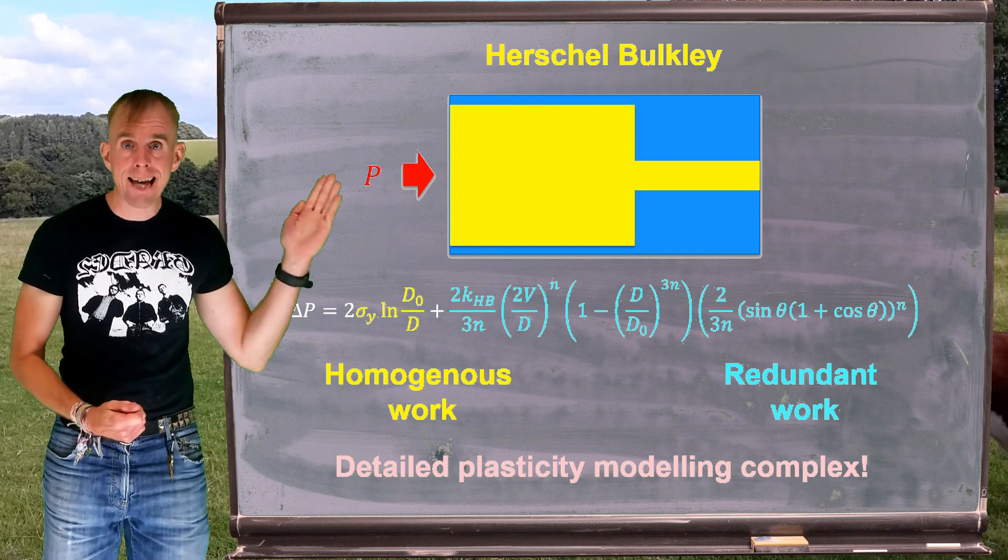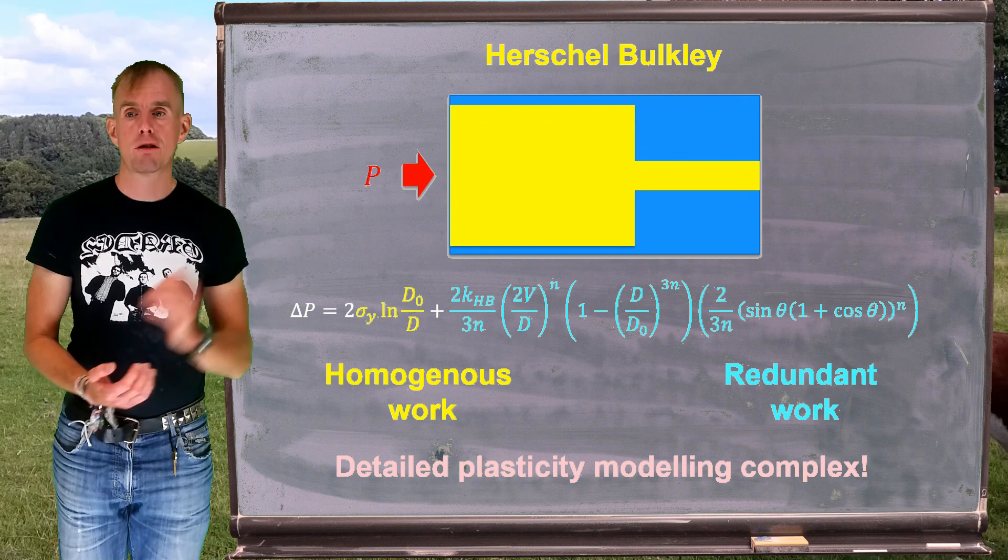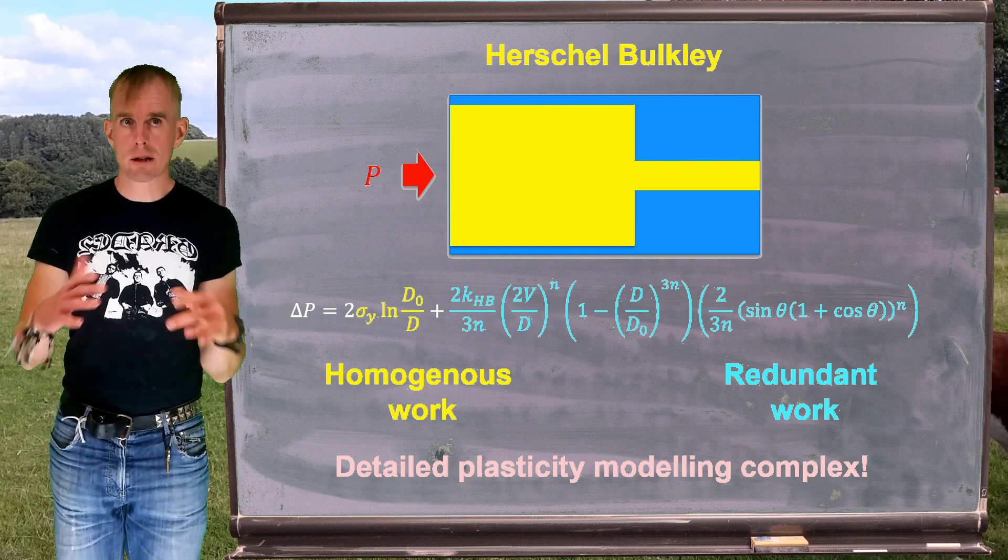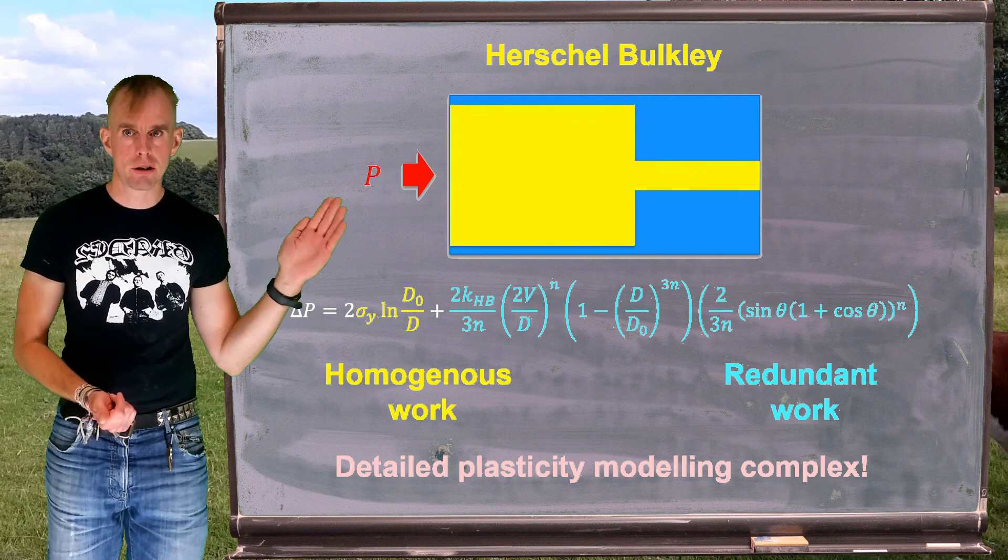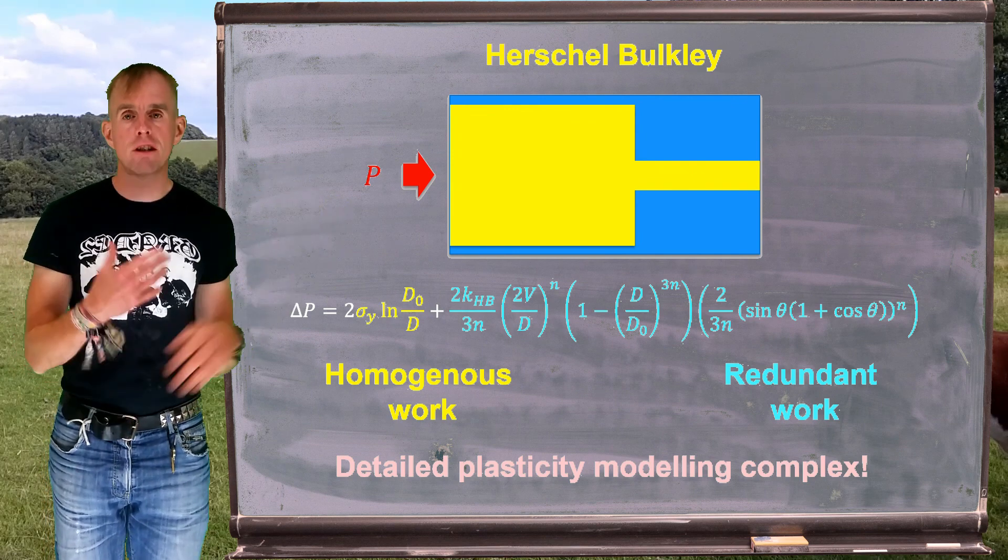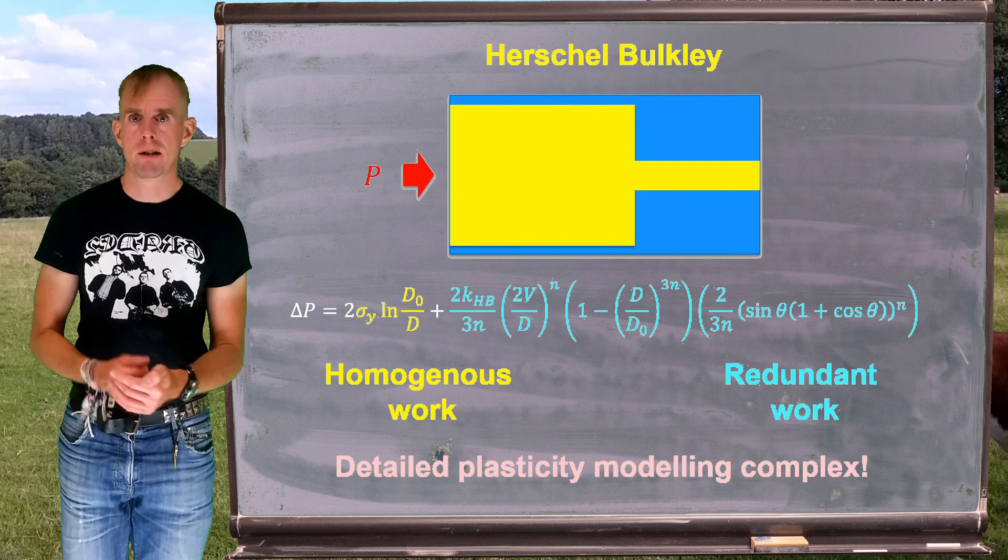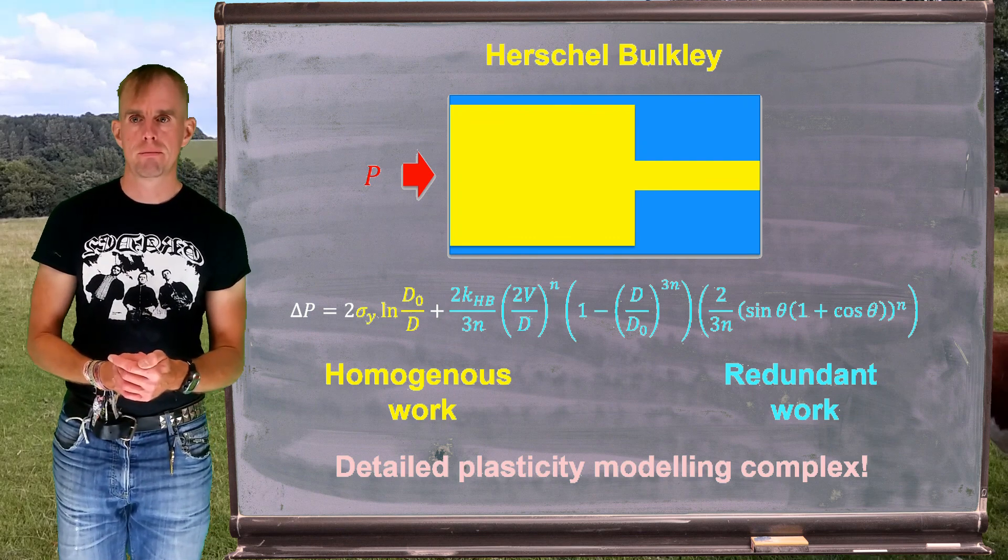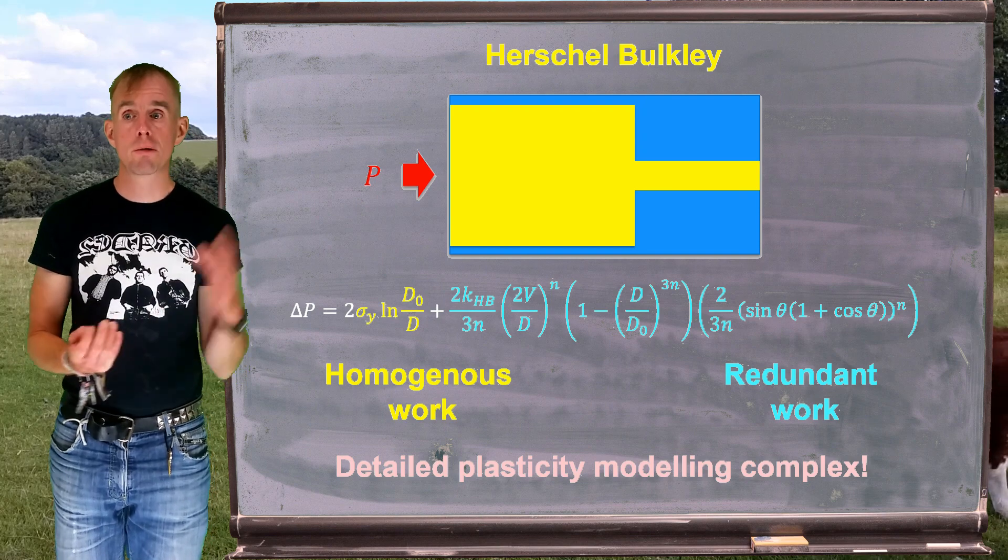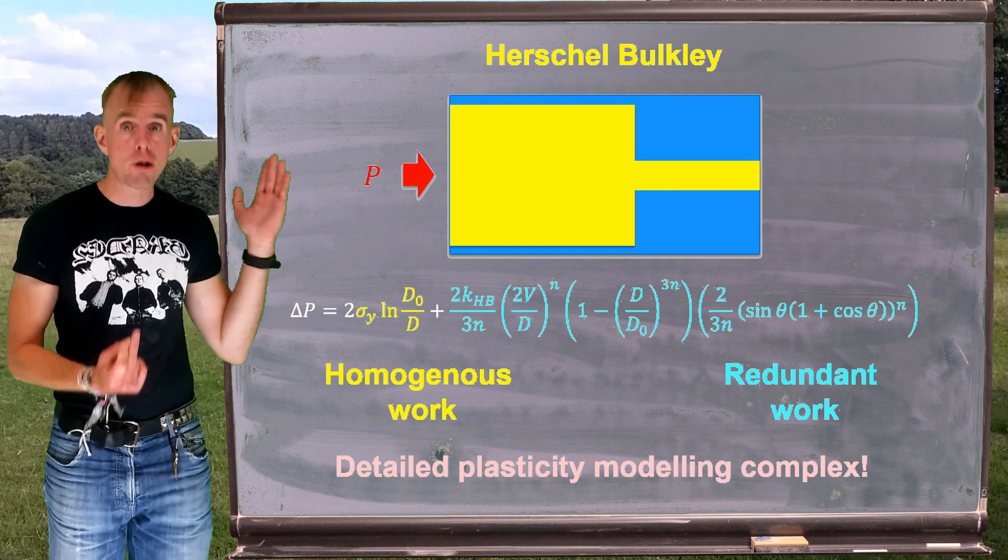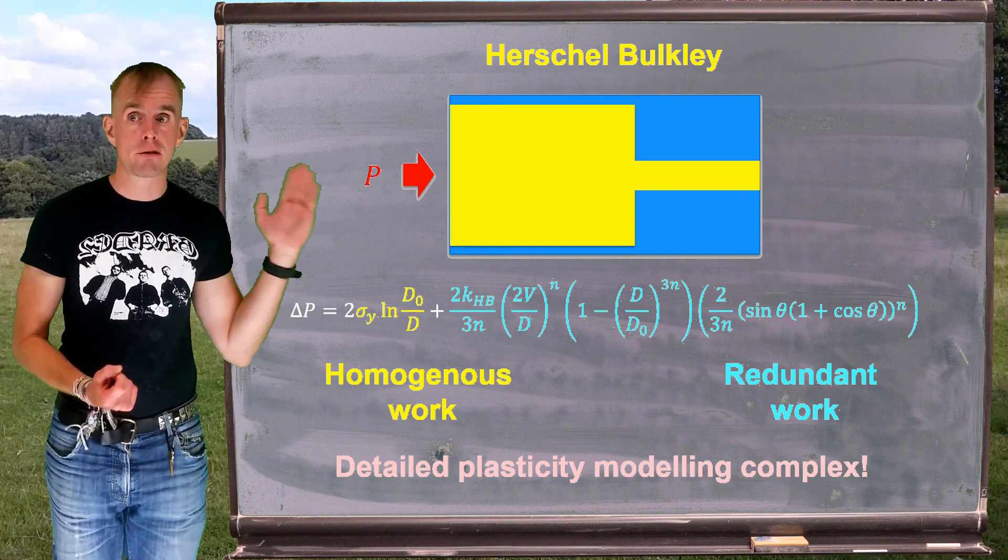Firstly, to say that, look, you can get analytical expressions subject to a great number of assumptions that allow one to calculate the redundant work in an extrusion. The redundant work is overcoming friction. It's overcoming viscous forces. Everything other than the internal resistance to shape change, which, of course, is the homogeneous work, which also very neatly comes out of this expression.